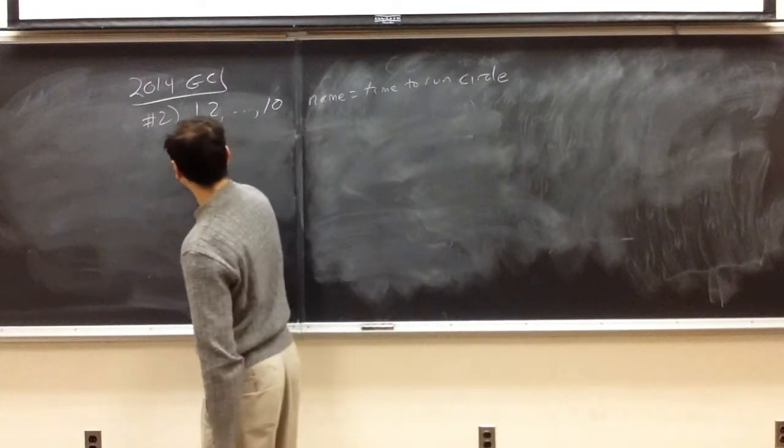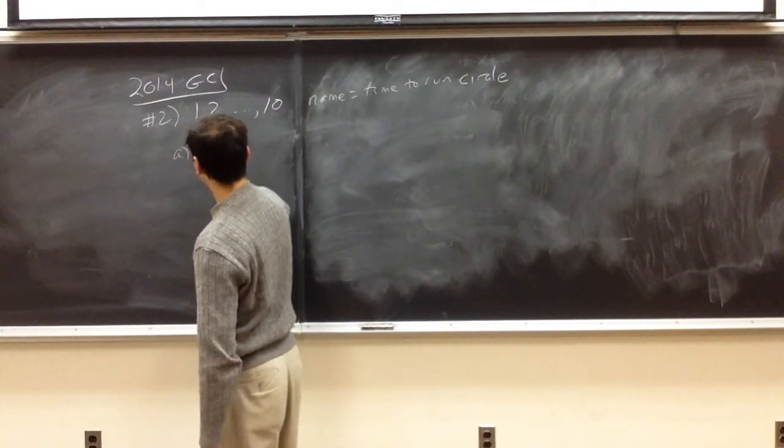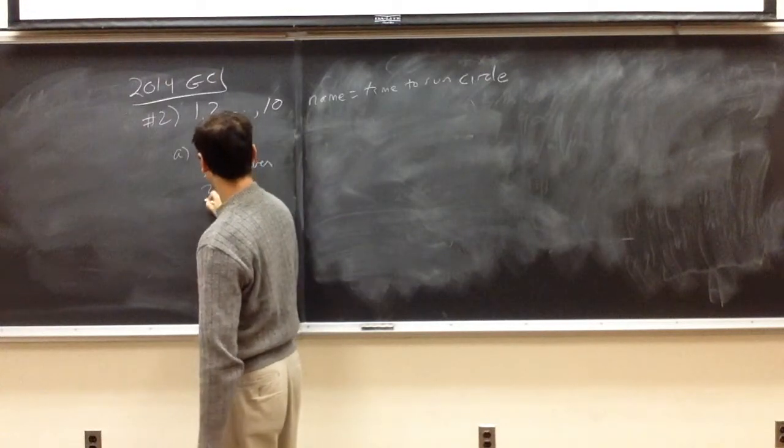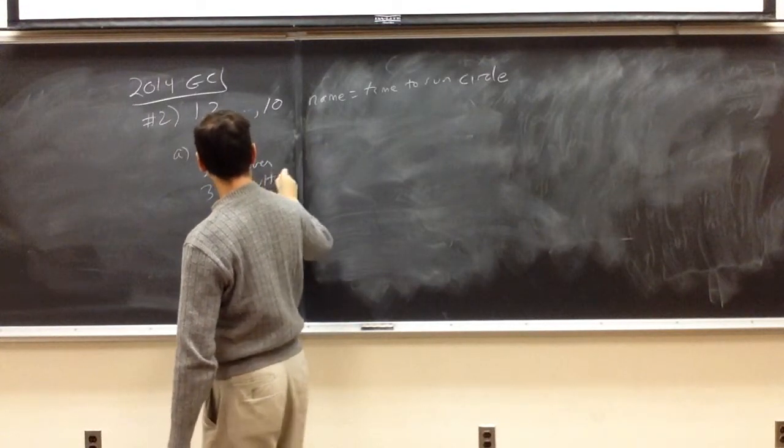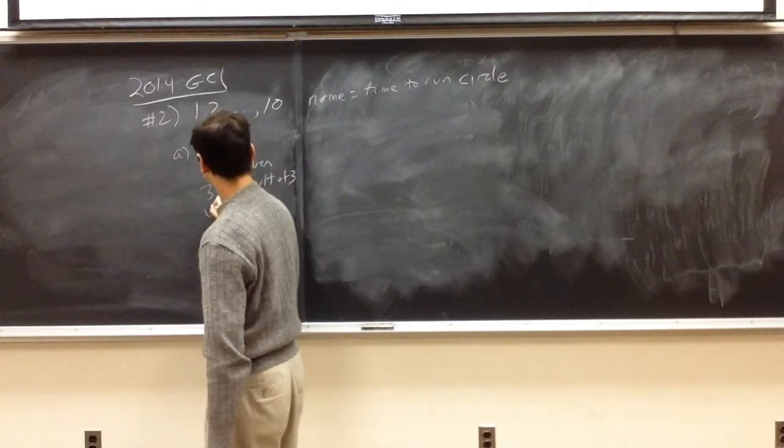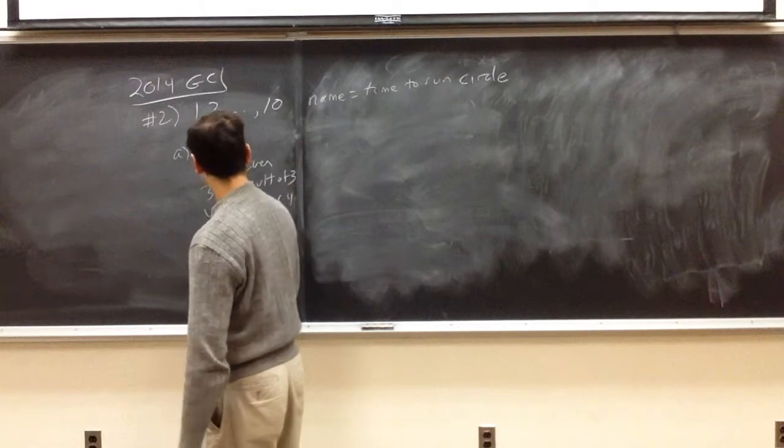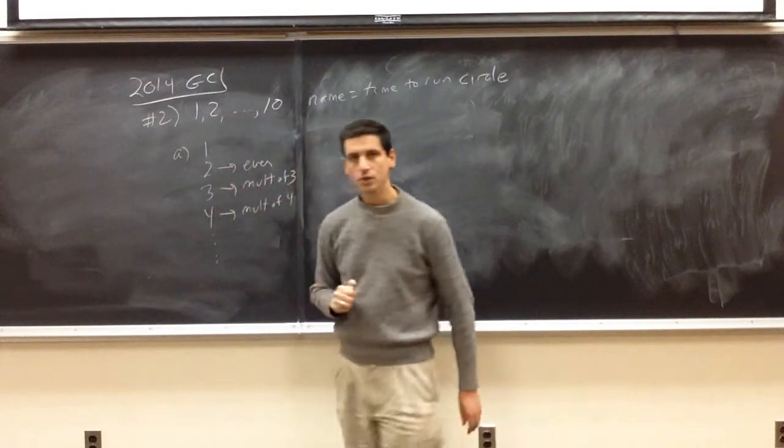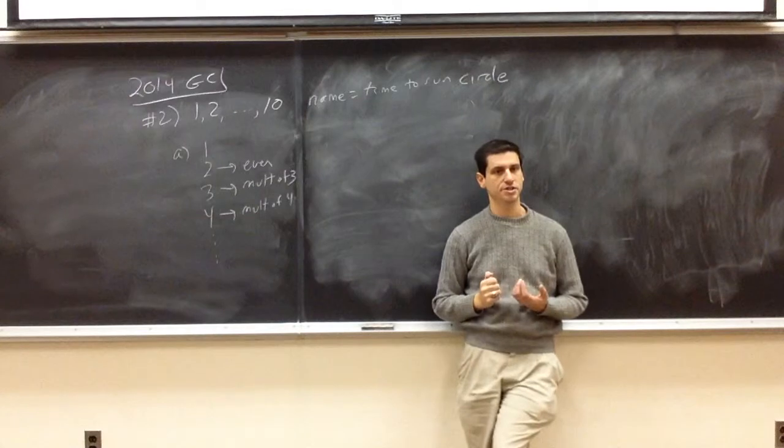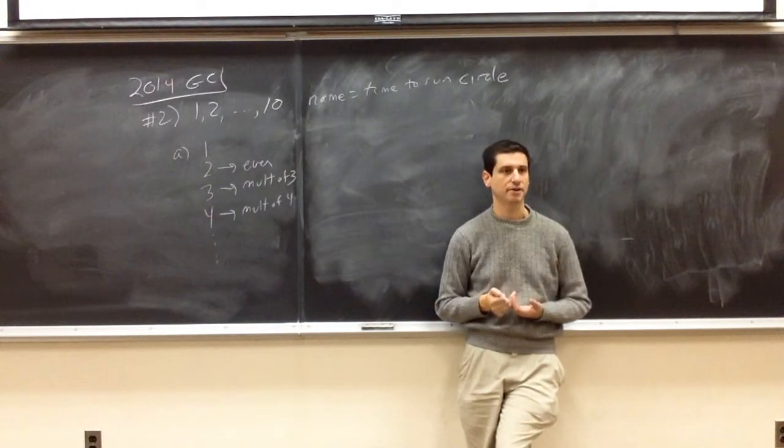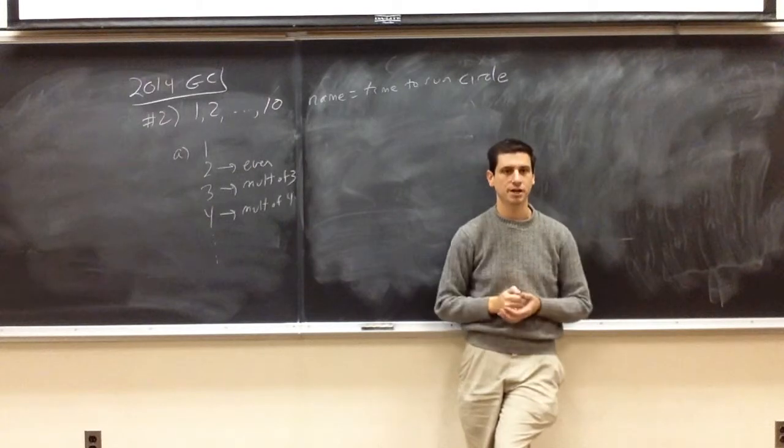And in part A, we ask, will all the horses return to the start at the end of, before it gets to the 2014th minute? And so, for A, we notice that 1 is always going to be there. 2, we need it to be an even number. 3, multiple of 3, 4, multiple of 4. So, when we start looking at this, we see certain horses subsume other horses.